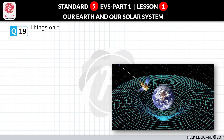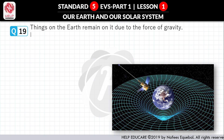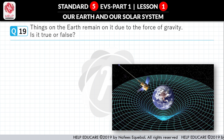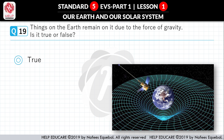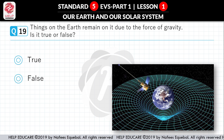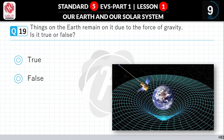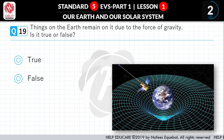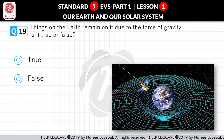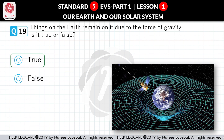Question No. 19: Objects stay on Earth due to the force of gravity. Is it true or false? First option: True. Second option: False. Correct answer is True.